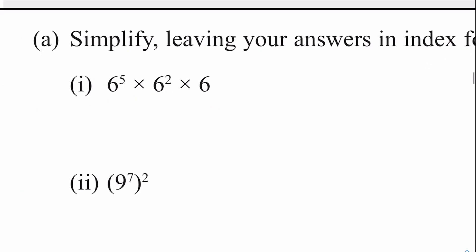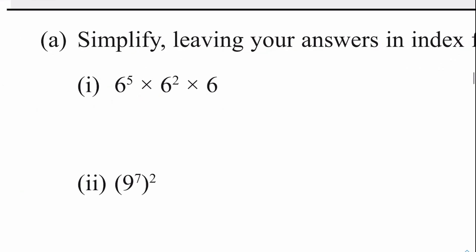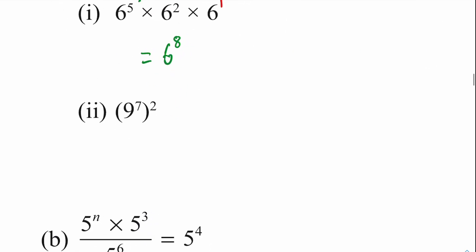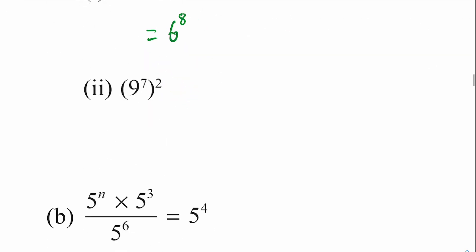We need to leave our answers in index form again, so this one is very similar to what we've seen already, apart from having three terms. We can do it in one go — we can imagine this is 6 to the power of one, and therefore all we're doing is adding the five and the two and then adding one to that answer. So five add two add one is eight, so we are left with 6 to the power of eight.